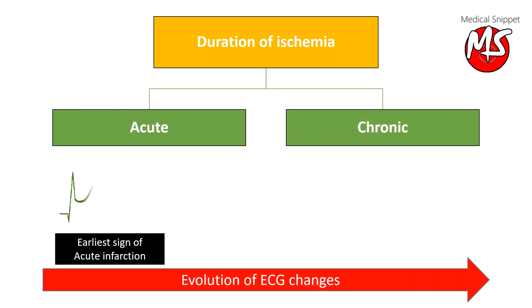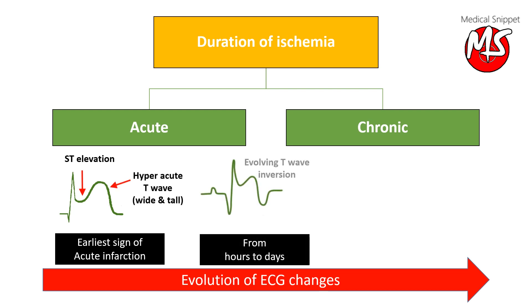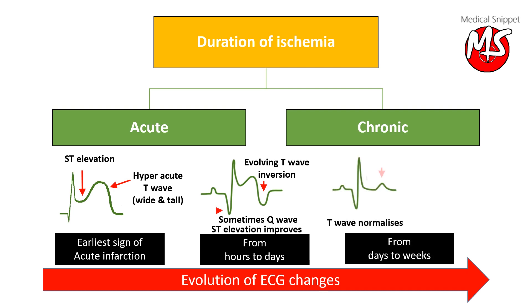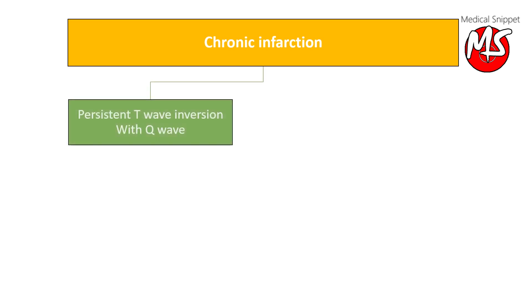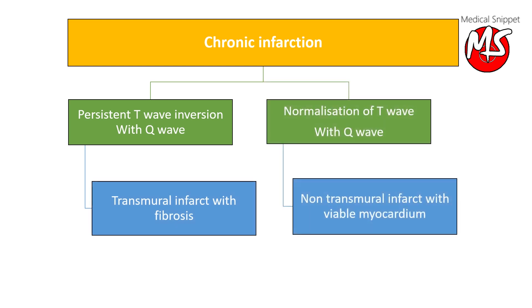The earliest sign of acute infarction is ST elevation and hyperacute T wave. After hours to days from acute infarction, there is evolving T wave inversion; ST elevation may start to improve and sometimes a Q wave may appear. After days to weeks, T wave inversion either resolves or persists indefinitely. In one series, persistent T wave inversion with Q wave was associated with transmural infarct with fibrosis, while normalization of T wave with Q wave was associated with non-transmural infarct with viable myocardium.